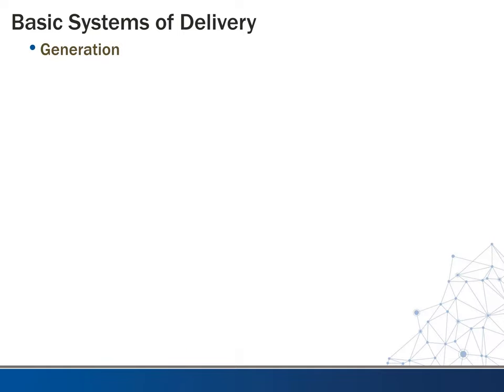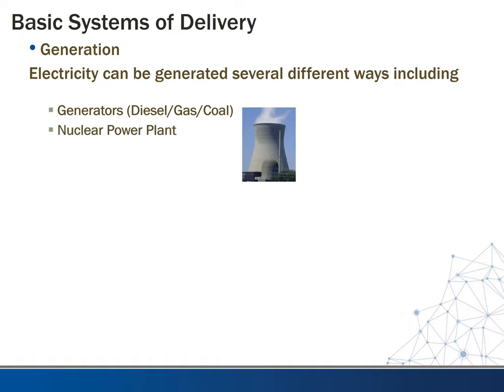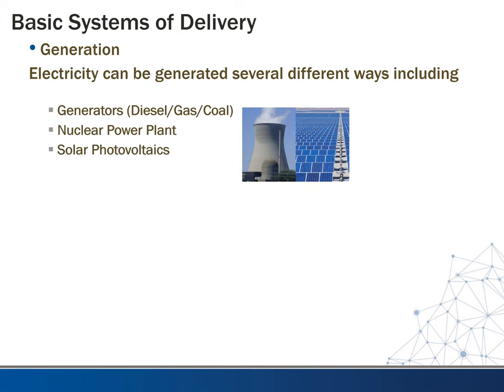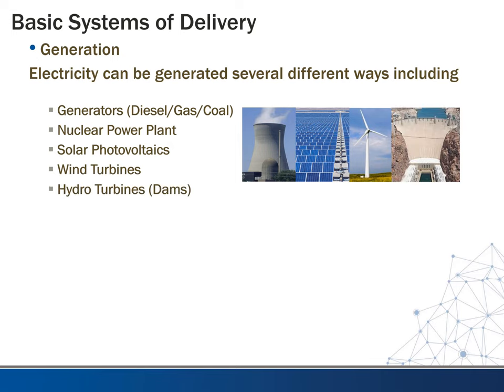The first aspect is generation. Electricity can be generated several different ways by the utility company, including using generators such as diesel, gas, or coal-fired generators, nuclear power plants, solar photovoltaics, wind turbines, and hydro turbines for dams. Here in Tennessee, TVA does quite a bit of this with hydro generation.